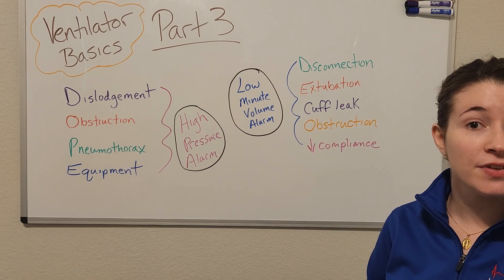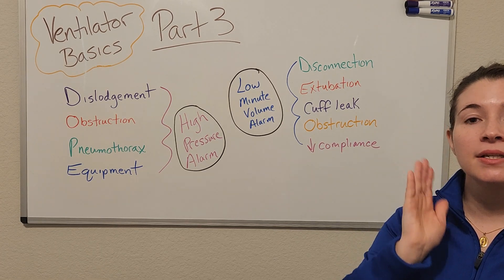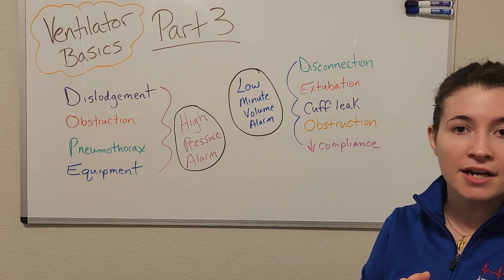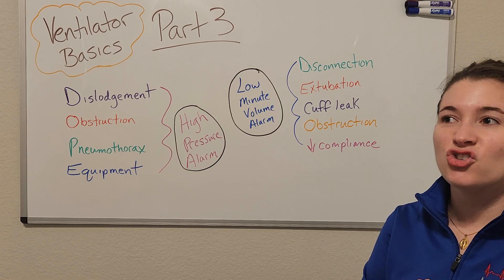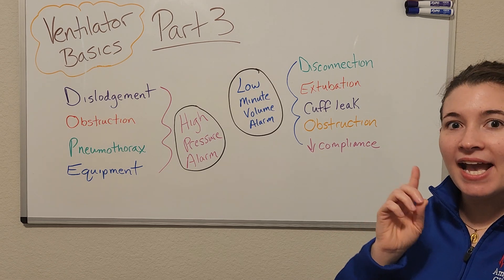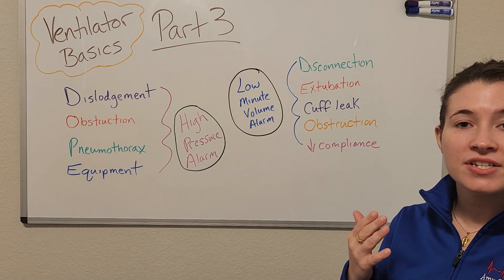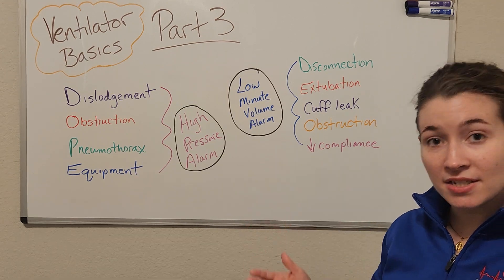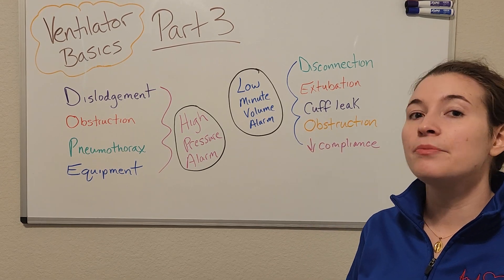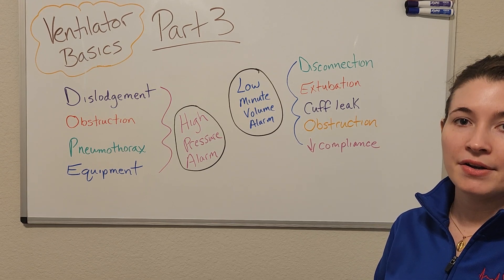A cuff leak is another common cause of a low minute volume alarm. If the cuff is deflated enough, air passes around the cuff around the vocal cords and trachea — you'll hear a catching sound, which is the air moving around the cuff. This causes some of that tidal volume to not reach the lungs. If you hear a cuff leak, notify your RT and they will assist in inflating the cuff on the breathing tube.